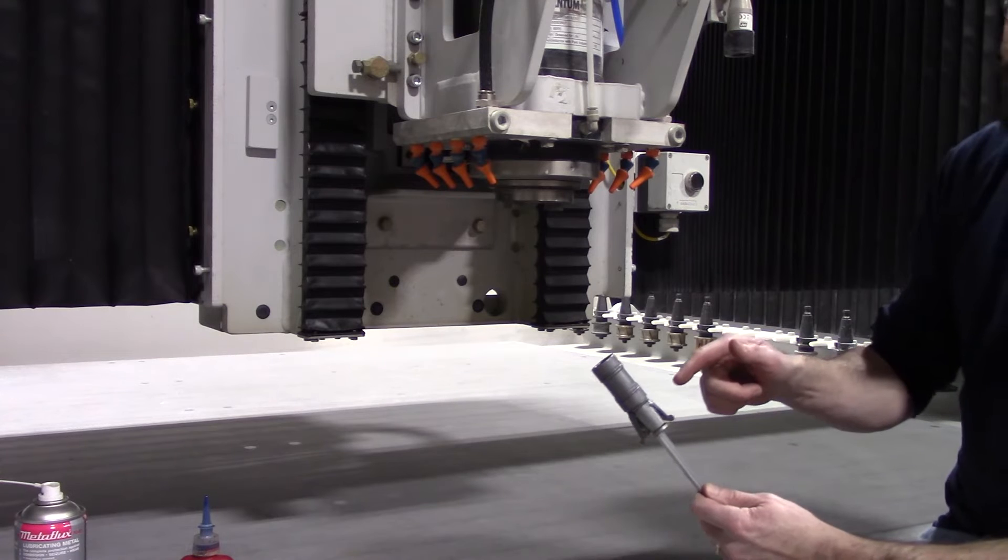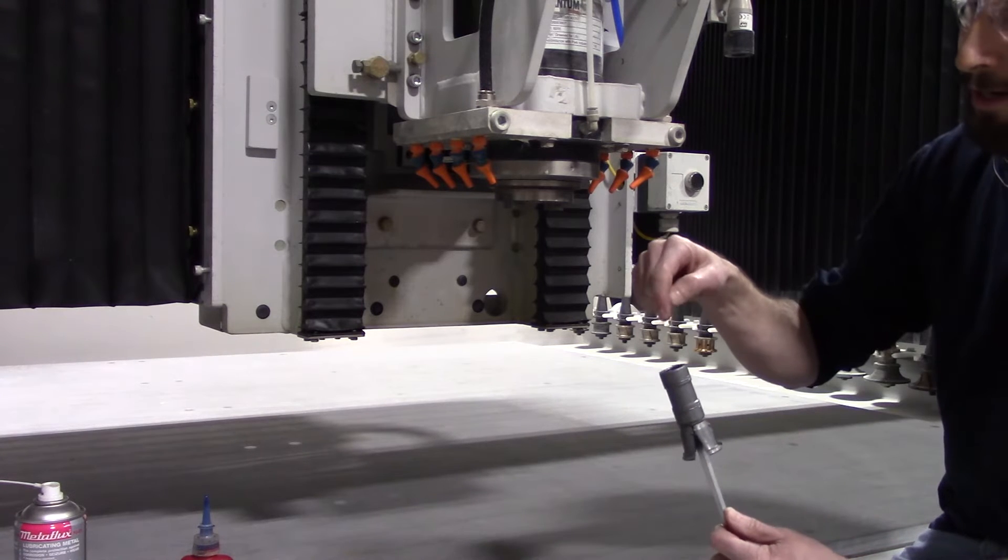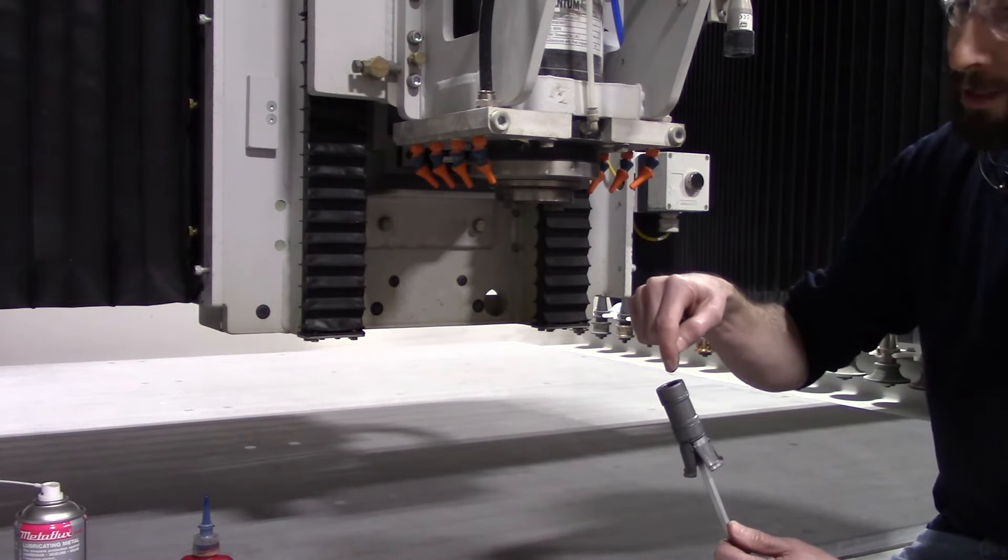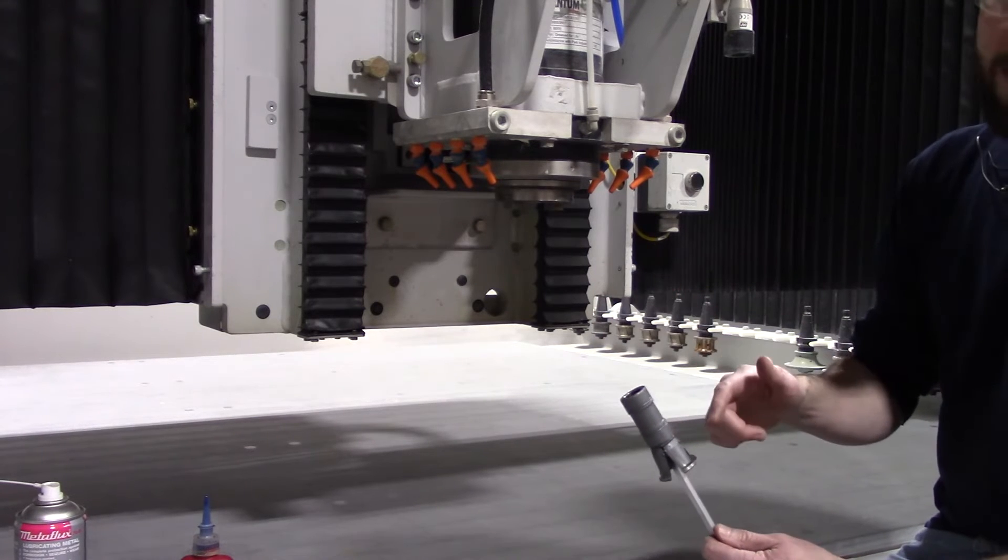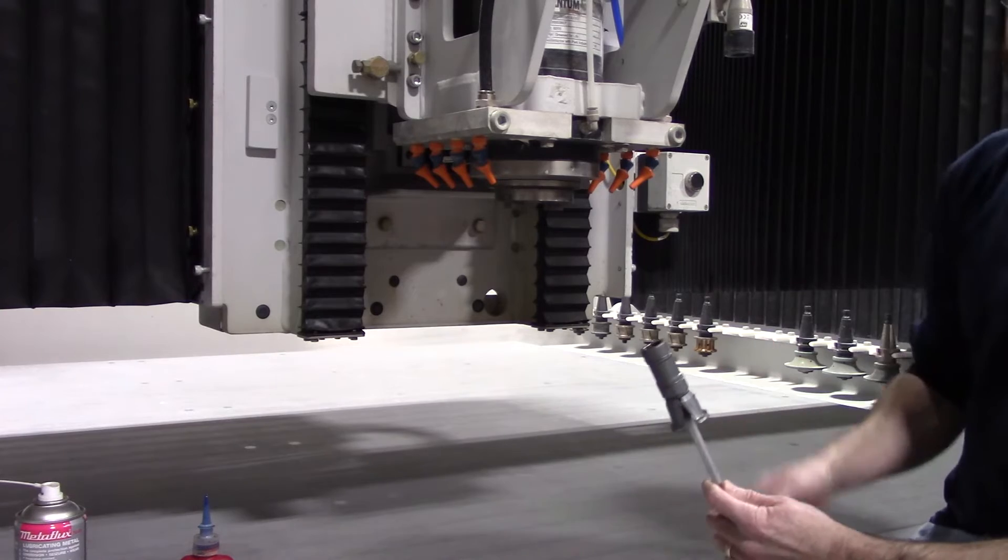So I have the exterior lubed with Metaflex. I have one drop of blue loctite on the internal threads. The drawbar is extended. Now we're ready to install this gripper set into the spindle.